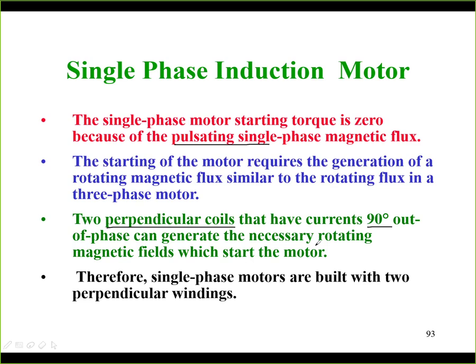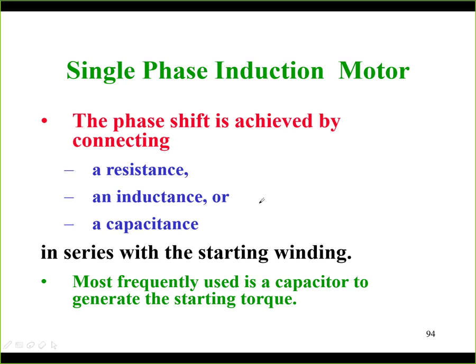At the end we can disconnect one of those two windings — the starting winding — and only the main winding will remain in operation. Construction-wise, the single phase induction motor is built with two perpendicular windings, although it is powered by a single phase current. Now let's look at how we can achieve this phase shift.